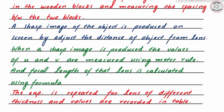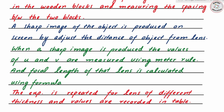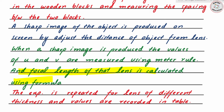When the sharp image is produced, record the values of u and v using the metre rule. Then calculate the focal length of the lens using the formula f = (u × v) / (u + v) that is given in the question.